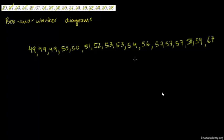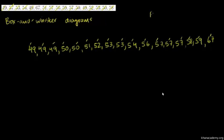Now the median, as you may or may not remember, is the middle of these numbers. So how many total numbers do we have? We have 17 numbers. The middle number — if you have 17 numbers, you add 1 to 17 and divide by 2, and you count that many spaces from either side. So this is 18 divided by 2, which equals 9. Counting to the 9th value gives us 53.